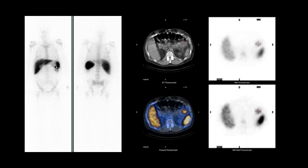On these images, there is a focus of abnormal uptake abutting the uptake in the spleen, which is seen here in the left upper quadrant. This whole body image by itself does not provide much information as to where it is and what is the significance of this focus.